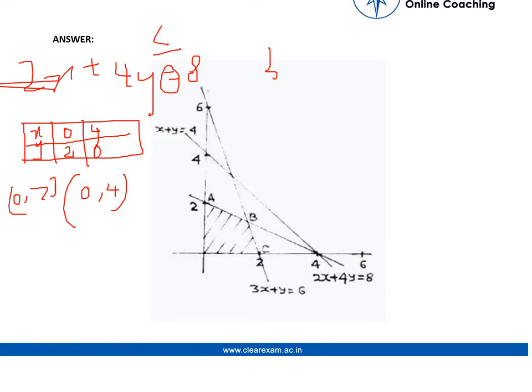Similarly for the other equations also we can get suitable points. Like for 3x plus y is equals to 6, we can get 0, 6 as one point and when y is equals to 0 we can get x is equals to 2.